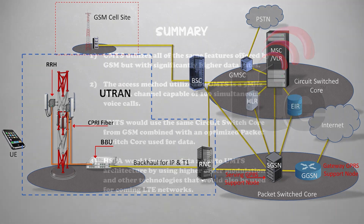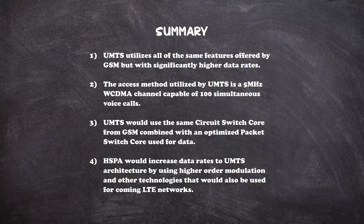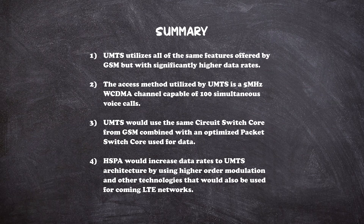So we'll leave it there. That covers UMTS — a 3G push for more data and more capacity thanks to WCDMA and the UTRAN's ability to get higher data rates from the packet switch core. The circuit switch core remains from GSM and simply connects to the RNC, and HSPA tried to squeeze out higher data rates using higher order modulation and other technologies that would make their way into 4G LTE, which we'll check out in the next video. Thanks everyone, and goodbye.